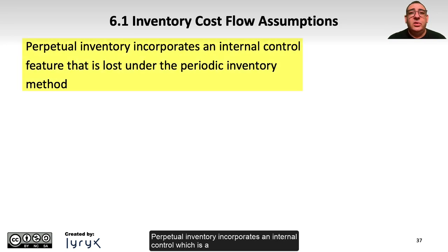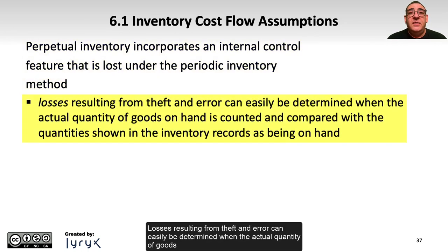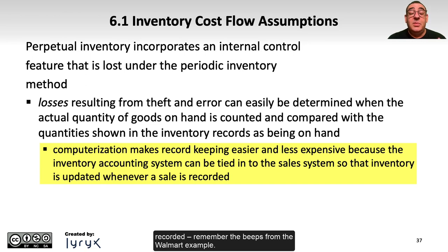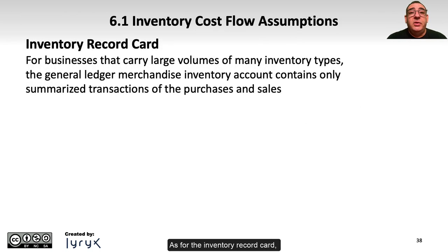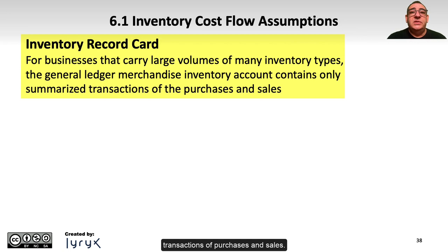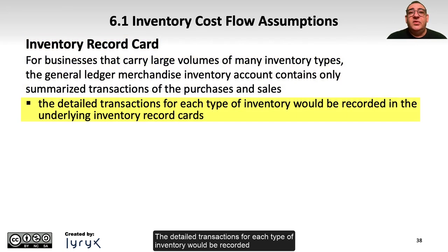Perpetual inventory incorporates an internal control, which is a feature that's lost under the periodic inventory method. Losses resulting from theft and error can easily be determined when the actual quantity of goods on hand is counted and compared with the quantity shown in the inventory records. Computerization has made record keeping much easier and less expensive because the inventory accounting system can be tied into the sales system, so inventory is updated whenever a sale is recorded. For a business that carries large volumes of many different types of inventory, the general ledger merchandise account contains only summarized transactions of purchases and sales, while detailed transactions for each type of inventory are recorded in the underlying inventory record cards.